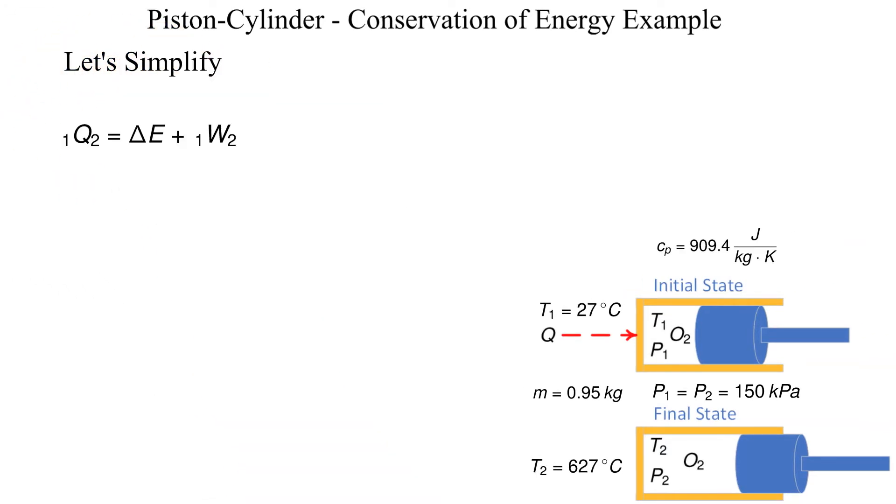Let's simplify. First let's review the components for energy: internal energy, potential energy, and kinetic energy. We'll define the datum at the elevation of the mass so potential energy is zero. There is no velocity at state 1 or 2 so kinetic energy is also zero.